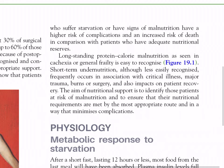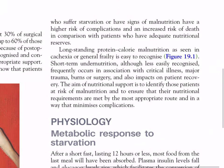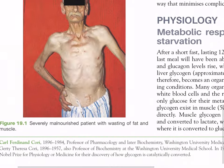Malnourished patients have an increased risk of death compared with patients who have adequate nutritional reserves. Long-standing protein-calorie malnutrition as seen in cachexia or general frailty is easy to recognize. Short-term undernutrition, although less easily recognized, frequently occurs in association with critical illness, major trauma, burns, or surgery and also impacts on patient recovery. The aim of nutritional support is to identify those patients at risk of malnutrition and ensure their nutritional requirements are met by the most appropriate route, minimizing complications.